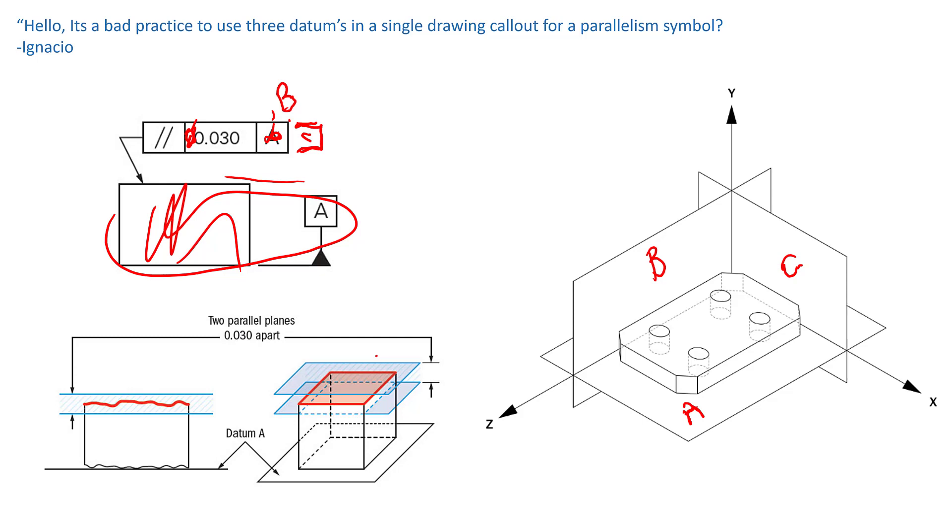So now if you look at the axis, we'll just look at one hole. Look at the axis going through this part. Now that axis can be parallel to B, and it can be parallel to C, but it cannot be parallel to A.